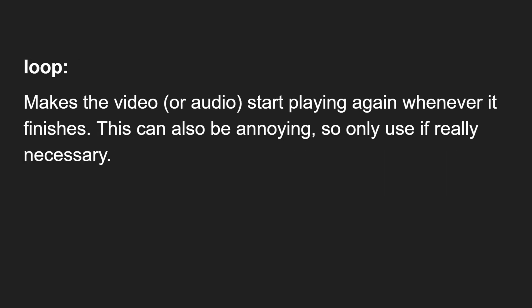Another attribute is loop. This makes the video start playing again whenever it finishes. Whenever the entire video playback is completed, if you set this attribute, it automatically starts playing again. This can also be annoying, so only use it if really necessary. The next one is muted — if you want the volume to be turned off, you can use this muted attribute and the sound will automatically be turned off.